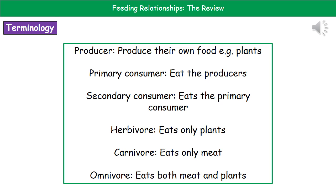We also have three terms that describe what organisms are actually eating. A herbivore only eats plants. A carnivore only eats meat. And an omnivore will eat both meat and plants.